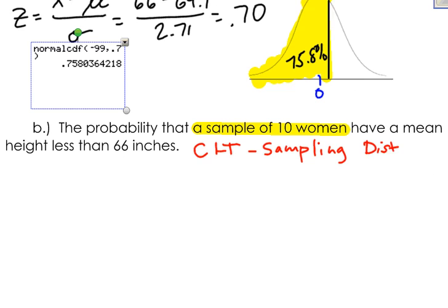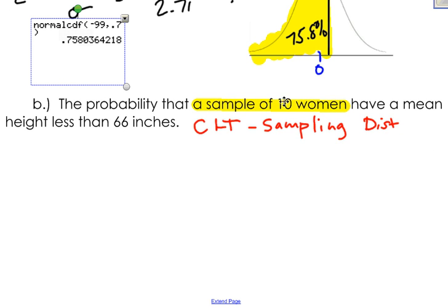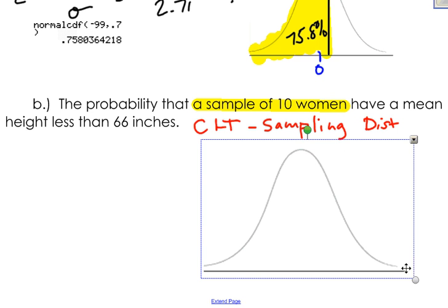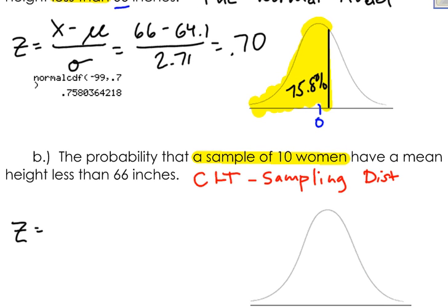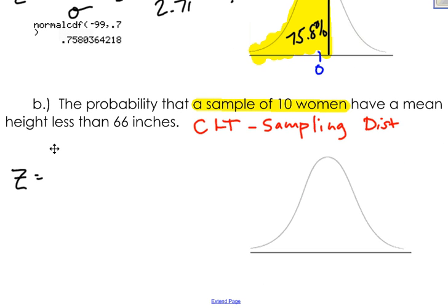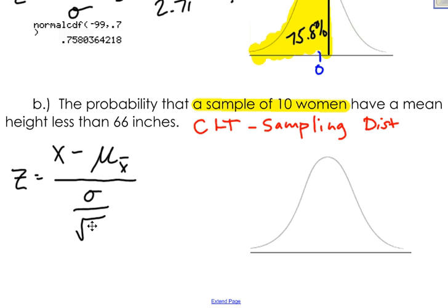Now, what about part B — what is the probability that a sample of 10 women will have a mean height that is less than 66 inches? When I'm dealing with sampling distributions, one property I know is that the distribution is bell-shaped and symmetric. The biggest thing that changes is that my z-score is no longer x minus mu divided by sigma. It's going to be x minus the mean of the sampling distribution, which is mu sub x-bar, divided by the population standard deviation over the square root of the sample size.